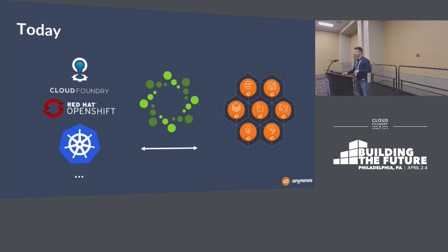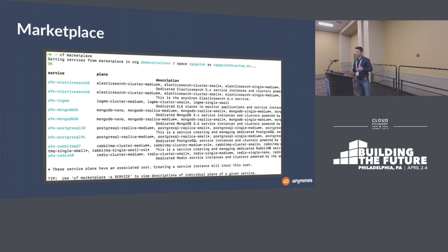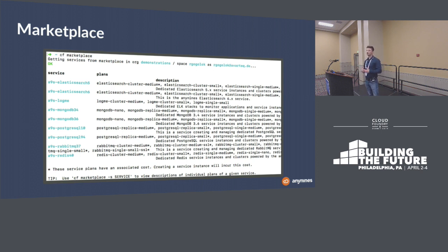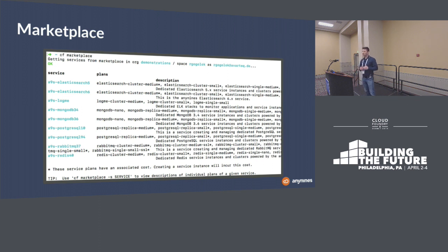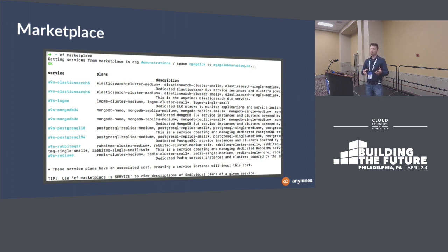To show how the marketplace looks — most of you probably already know, but for those who haven't seen a Cloud Foundry marketplace yet — you run CF marketplace and you get all the services provided across all the brokers registered in that Cloud Foundry endpoint. You see a couple of services, and with each service there are also a couple of service plans which define how big the service instance will be and what topology it will have — for example, whether you have a single-node MySQL cluster or a three-node cluster with replication so that when one node fails, the others take over the workload.